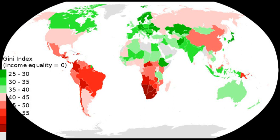This is a list of countries or dependencies by income inequality metrics, including Gini coefficients. The Gini coefficient is a number between 0 and 1, where 0 corresponds with perfect equality where everyone has the same income, and 1 corresponds with perfect inequality where one person has all the income and everyone else has 0 income.